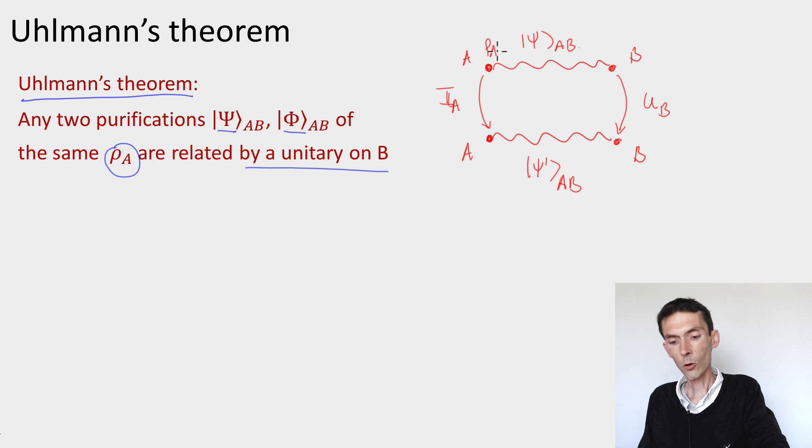So here I should have a reduced density ρ_A, here I should have a reduced density ρ_A, because acting by a unitary on system B is not going to change the reduced density on A. And Uhlmann's theorem says that not only is this a necessary condition, but it's a sufficient condition.